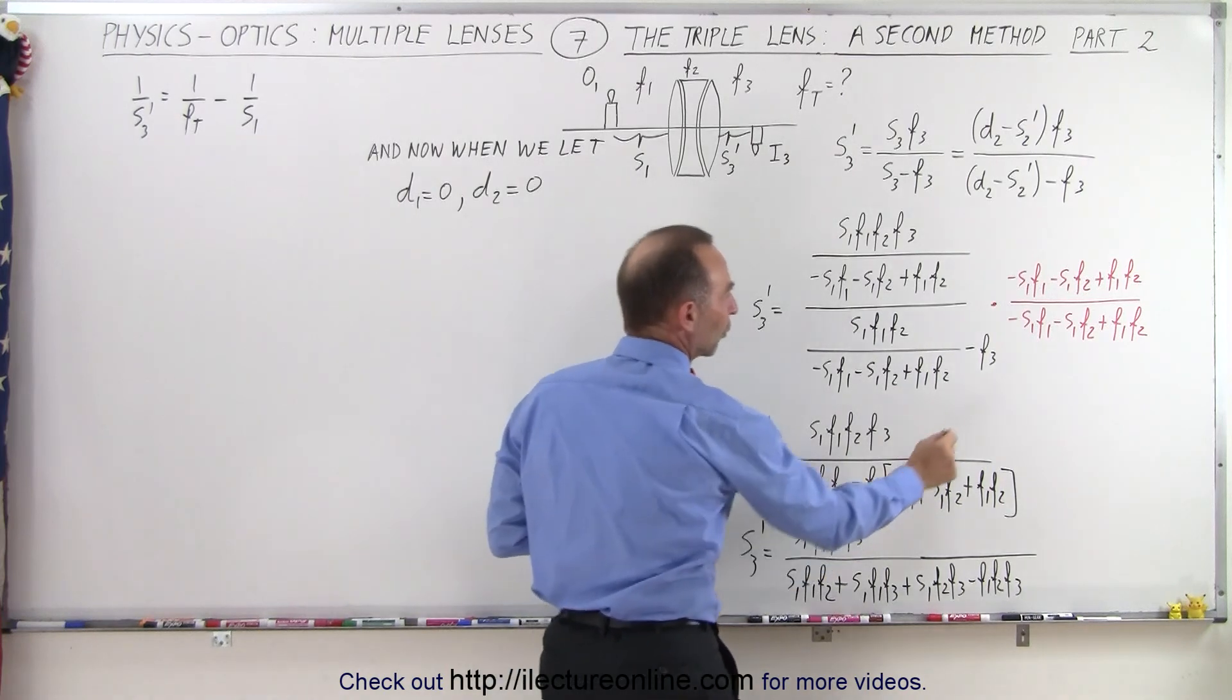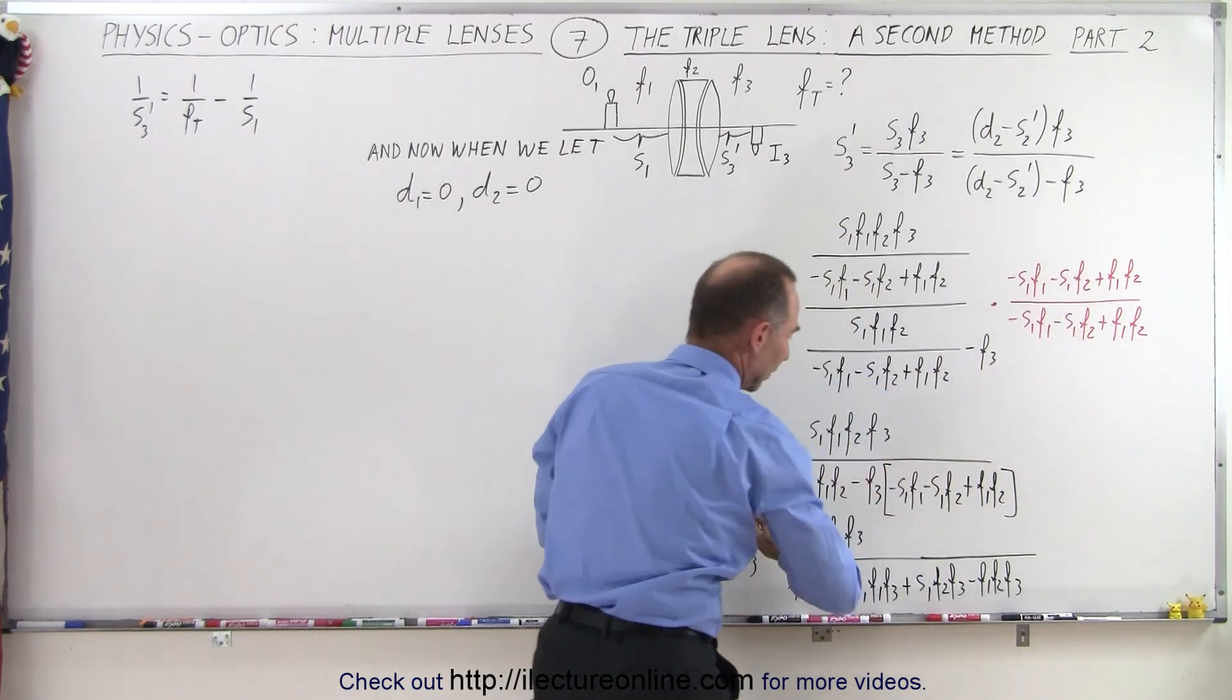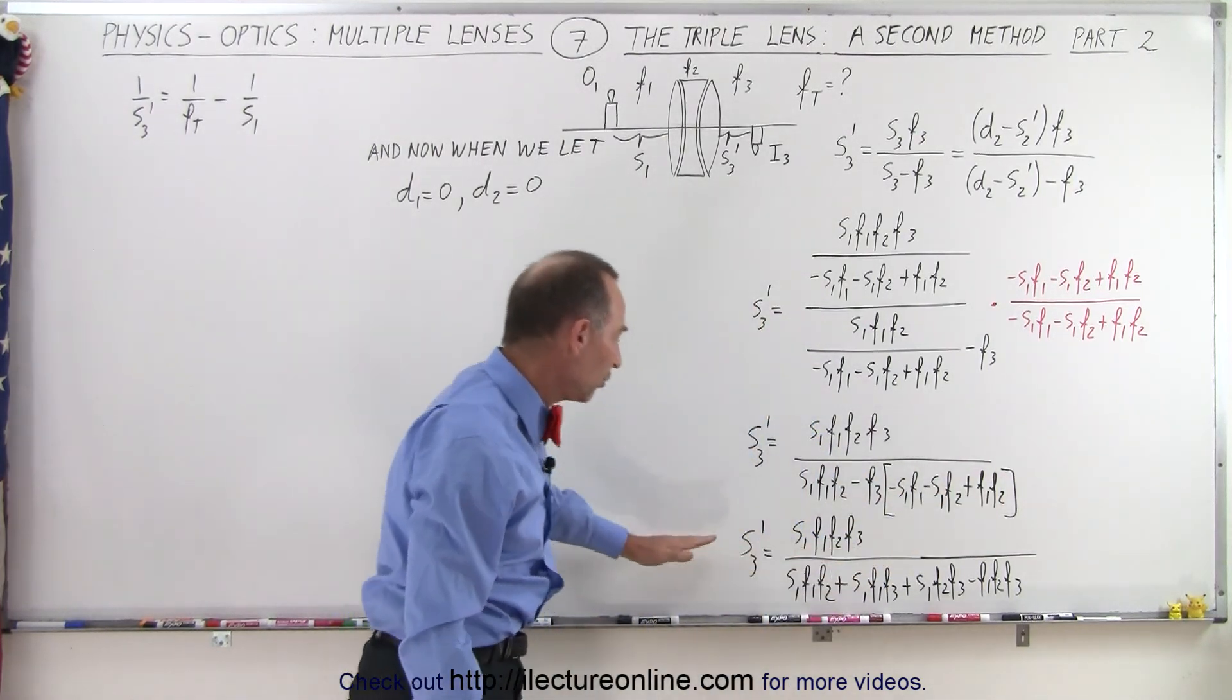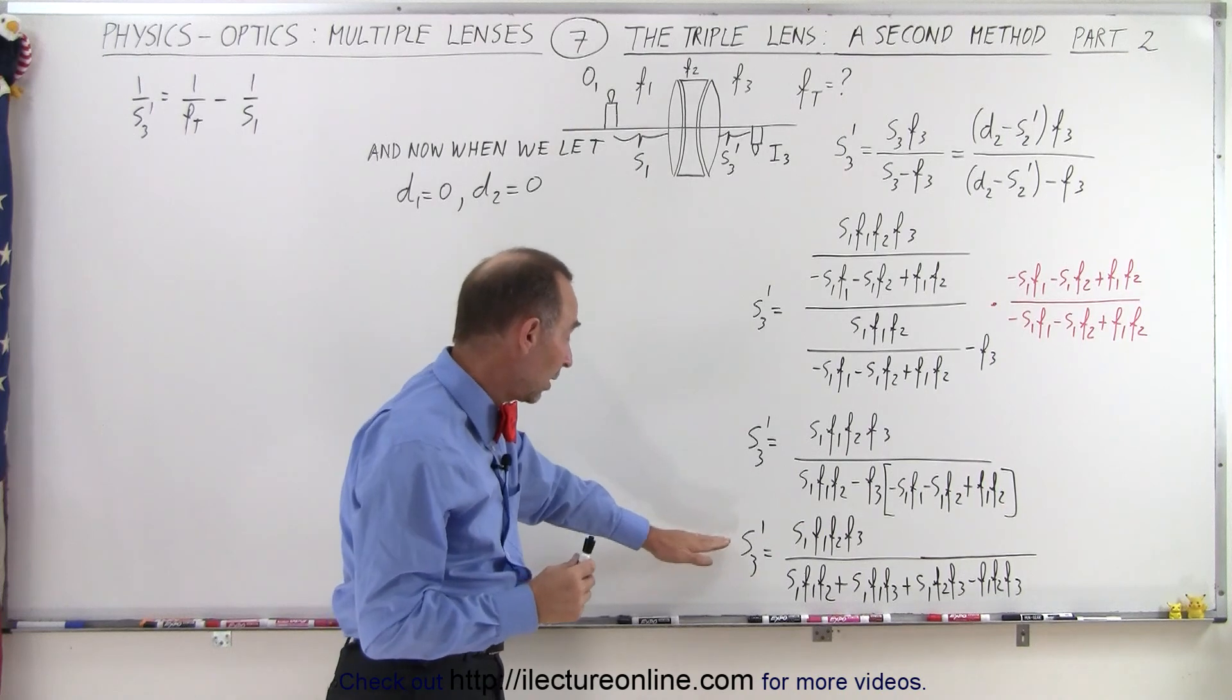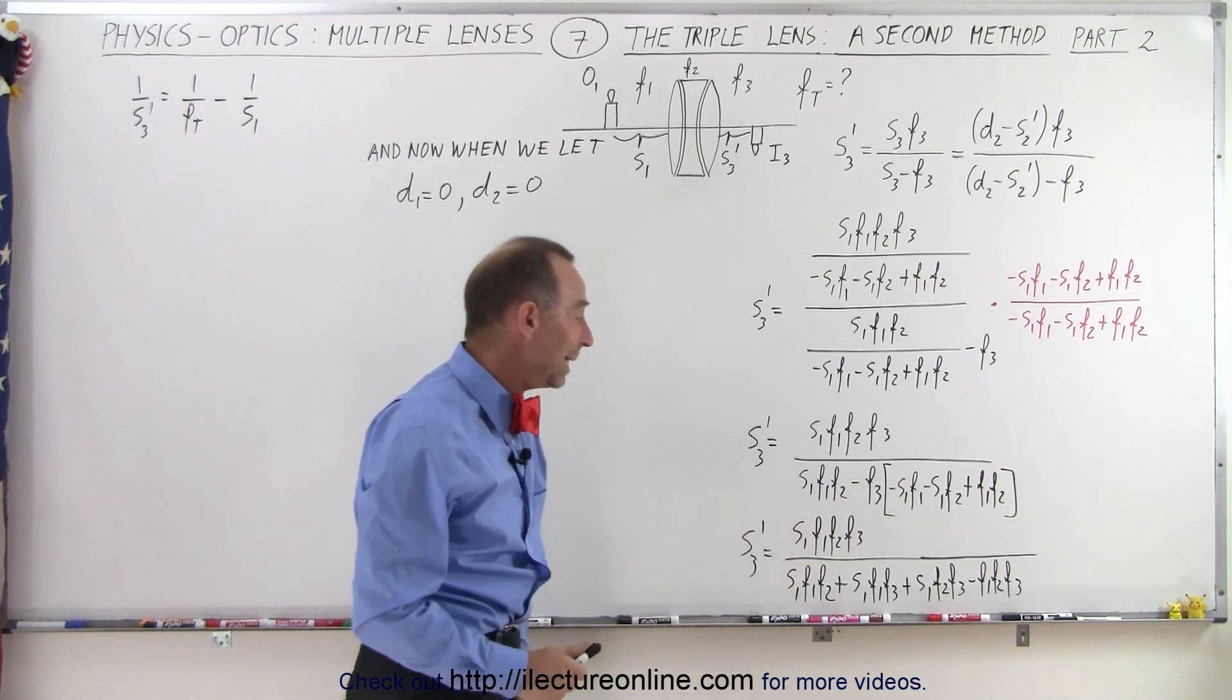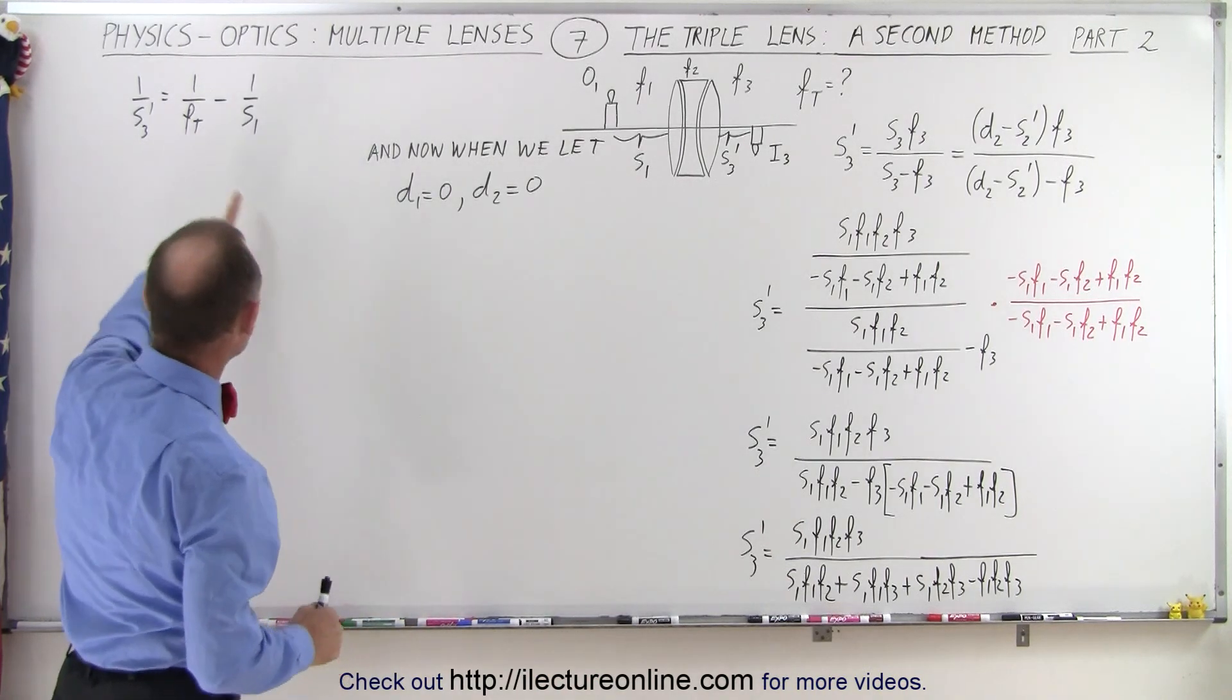Of course we do have to multiply f3 by this in order to get the equivalent equation. Then notice when we multiply everything through, we have an expression for s3 prime in terms of f1, f2, f3, and s1.